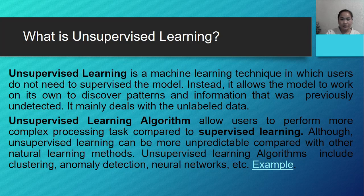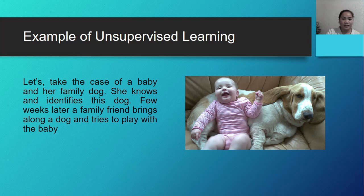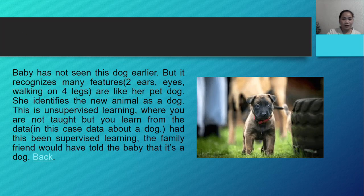Unsupervised learning algorithms include clustering, anomaly detection, neural networks, and more. As an example, let's take the case of a baby and her family dog. She knows and identifies this dog. A few weeks later, a family friend brings along a dog. The baby has not seen this dog earlier but recognizes many features — two ears, eyes, walking on four legs — like her family dog. She identifies the new animal as a dog. This is unsupervised learning, where you are not taught but you learn from the data. In supervised learning, the family friend would have told the baby that it's a dog.